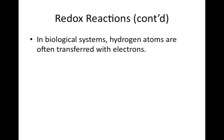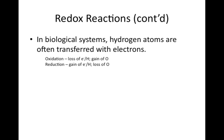It is not possible to track the movement of electrons in biological systems. However, hydrogen atoms are often transferred with electrons, so we can track oxidations and reductions by looking at the movement of hydrogens. Remember that oxidation involves a loss of electrons or hydrogen, or a gain of oxygen. Reduction involves a gain of electrons or hydrogen, or a loss of oxygen.